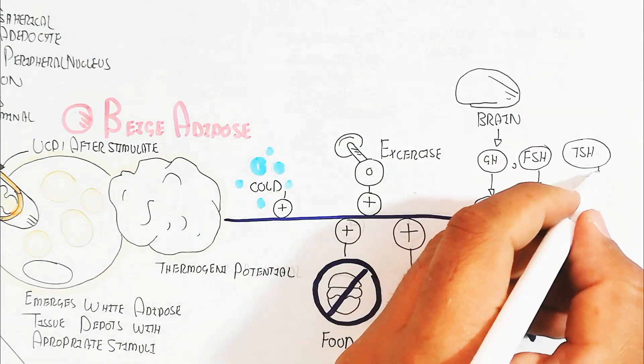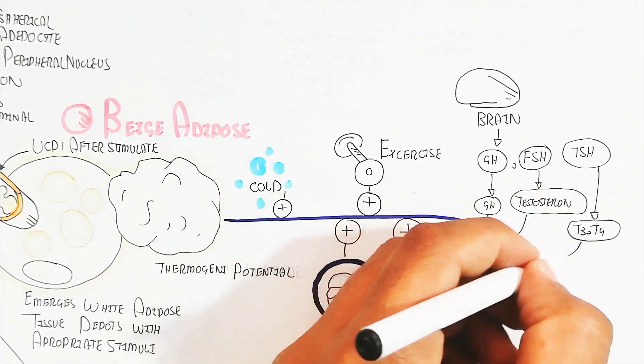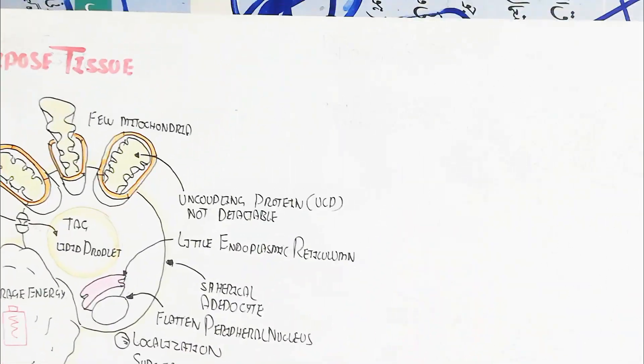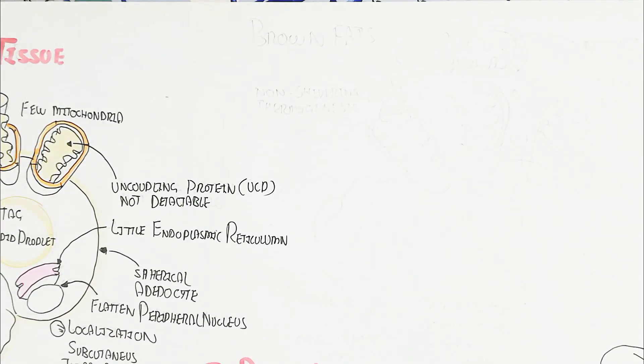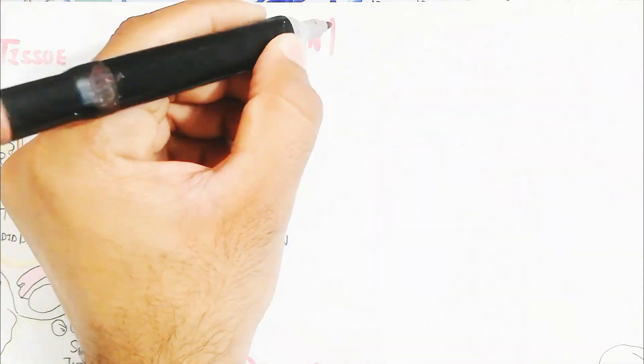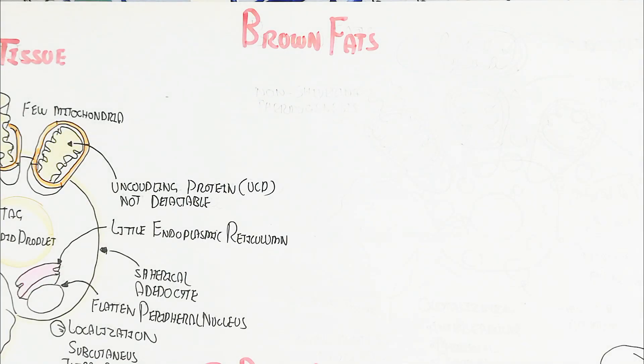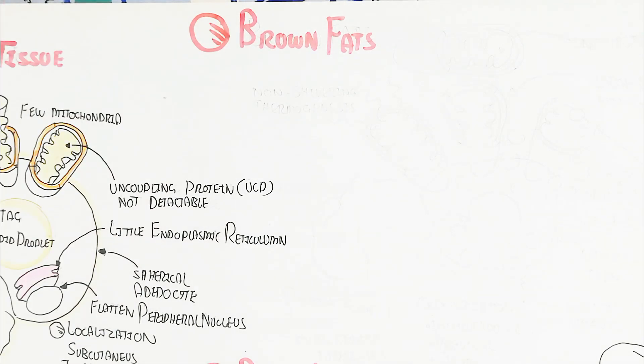And the brain will give the signal for this conversion from the beige adipose tissue into the brown adipose tissue. Like brain will give signal into growth hormone, follicle-stimulating hormone, and thyroid-stimulating hormone will collectively, testosterone and T3 and T4 and growth hormone collectively will convert beige adipose to brown fat.